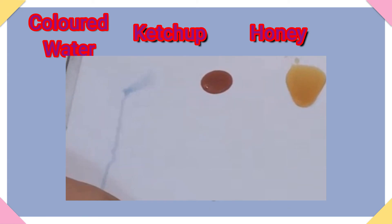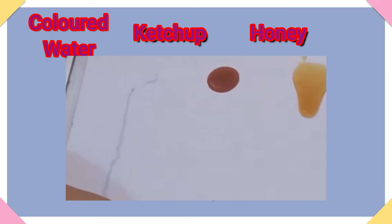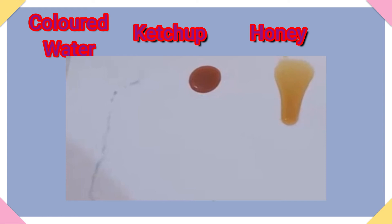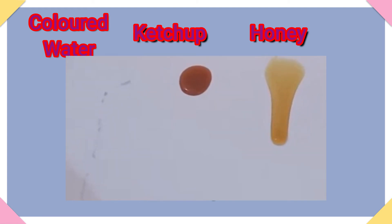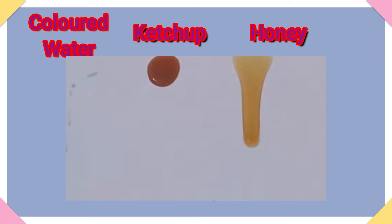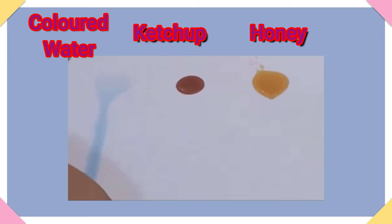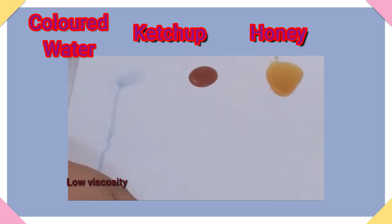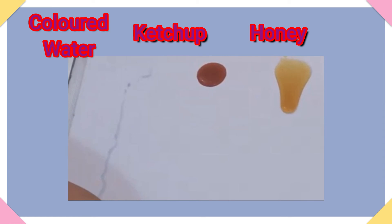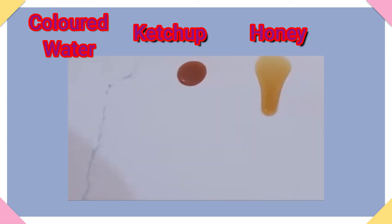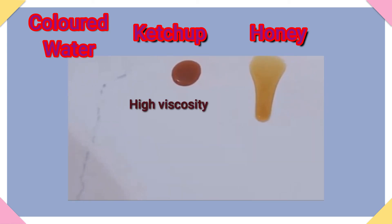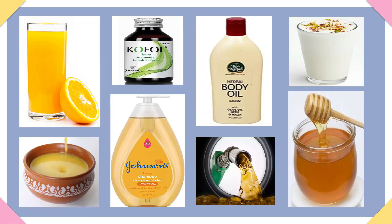Here we have seen water flows faster, followed by honey, then ketchup. Low viscosity flows faster, meaning water has low viscosity and ketchup has high viscosity. You can also try using different liquids available at your home.